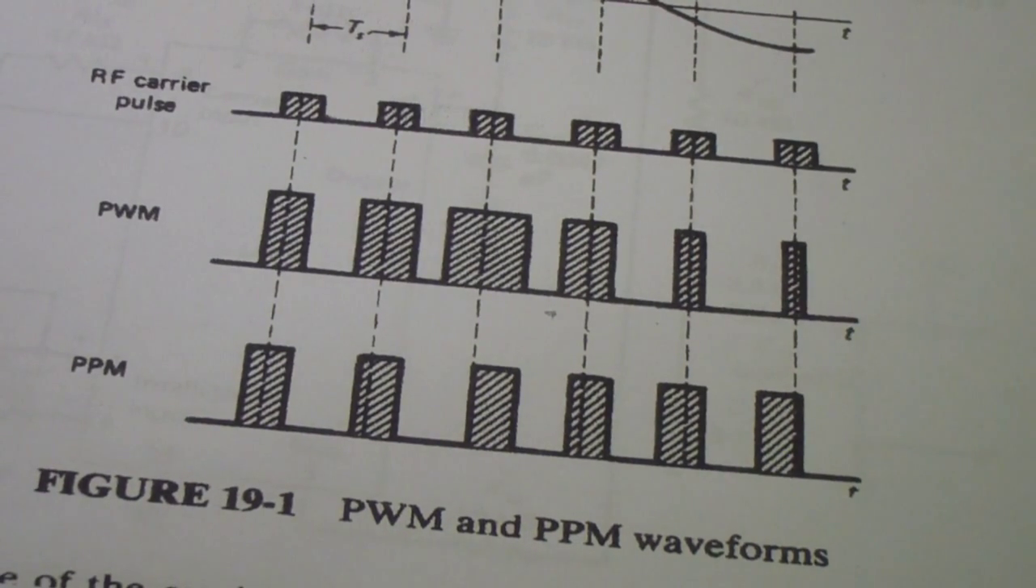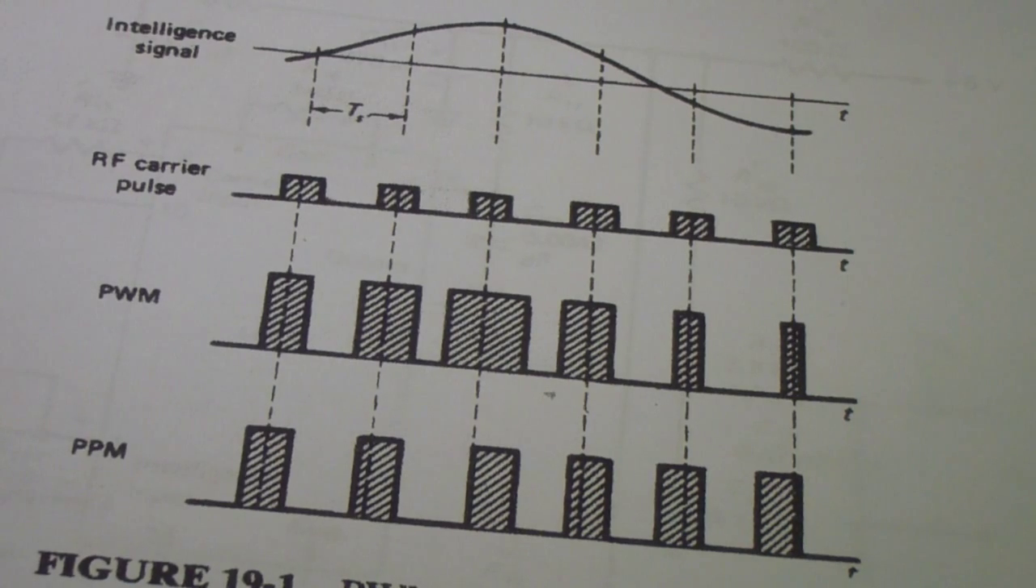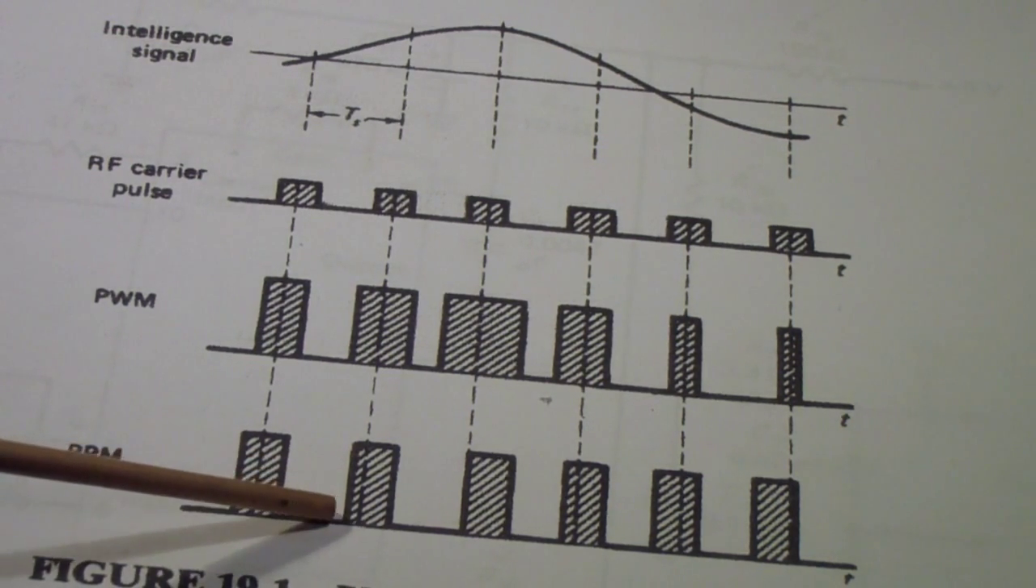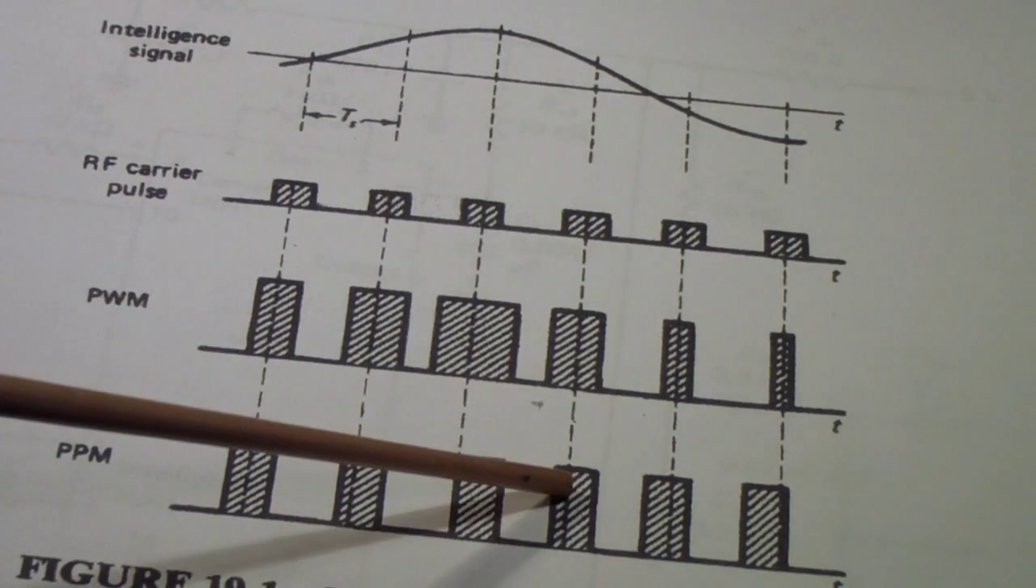Before we look at how we're going to use the 1496, it might be helpful to review what this modulation is about. This diagram might help. At the top is the intelligence signal. Below it is a carrier pulse. Below that is pulse width modulation and pulse position modulation. With PPM, the distance between pulses varies but the width stays the same. With pulse width modulation, the distance between pulses changes but the width of the pulse also changes.